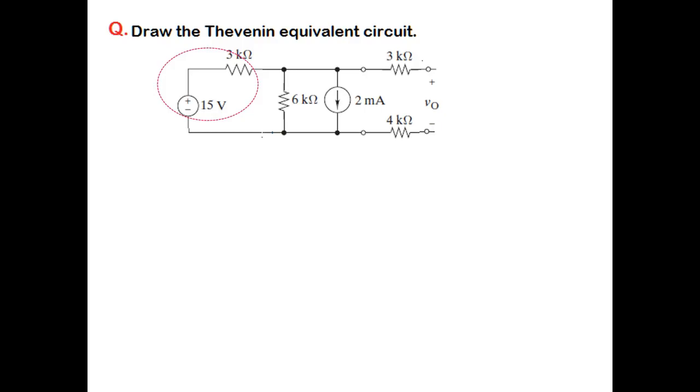This is the first step. We convert this into a current source and a resistance in parallel. 15 divided by 3 kilo gives 5 milliamperes, direction up, 3 kilo in parallel, and these are the remaining existing circuits.